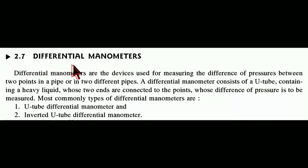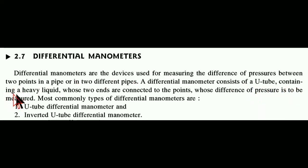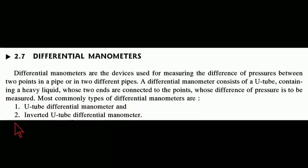Differential manometers are devices used for measuring the difference of pressures between two points in a pipe or in two different pipes. A differential manometer consists of a U-tube containing a heavy liquid, whose two ends are connected to the points whose difference of pressure is to be measured. The most common types are: number one, the U-tube differential manometer, and number two, the inverted U-tube differential manometer.